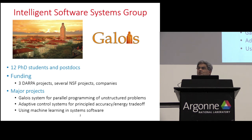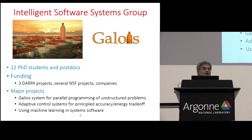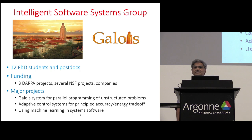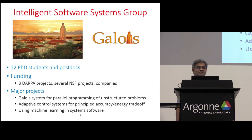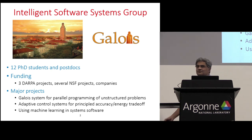We've also done work on adaptive control systems for principled accuracy-energy trade-offs in all kinds of computations. And lately we've started to try and understand how to use machine learning in system software. The logo for our project is called Galois, and you can see that the center eye is similar to the main tower on campus. This logo was designed by one of our Portuguese collaborators who spent a year at UT, and if you look closely you can actually see our football stadium.